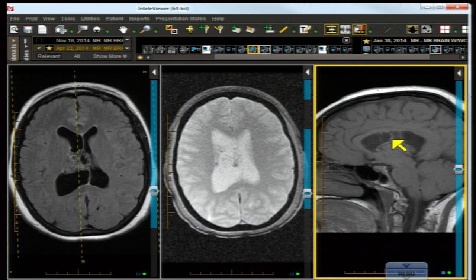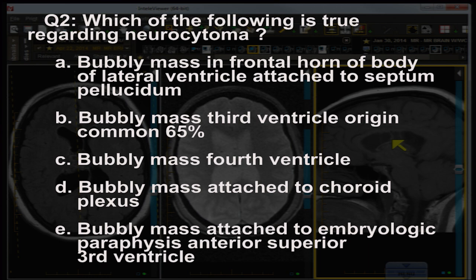The correct answer to question two is A: bubbly mass in the frontal horn or body of the lateral ventricle, often attached to the septum pellucidum. It can also be attached to the lateral wall of the ventricle. It is not a common mass in the third ventricle — even though it involves the foramen of Monroe and produces obstruction, it does not arise from the third ventricle in probably less than 3 to 5 percent, possibly as little as 1 percent of cases. Bubbly mass in the fourth ventricle is a very rare site.